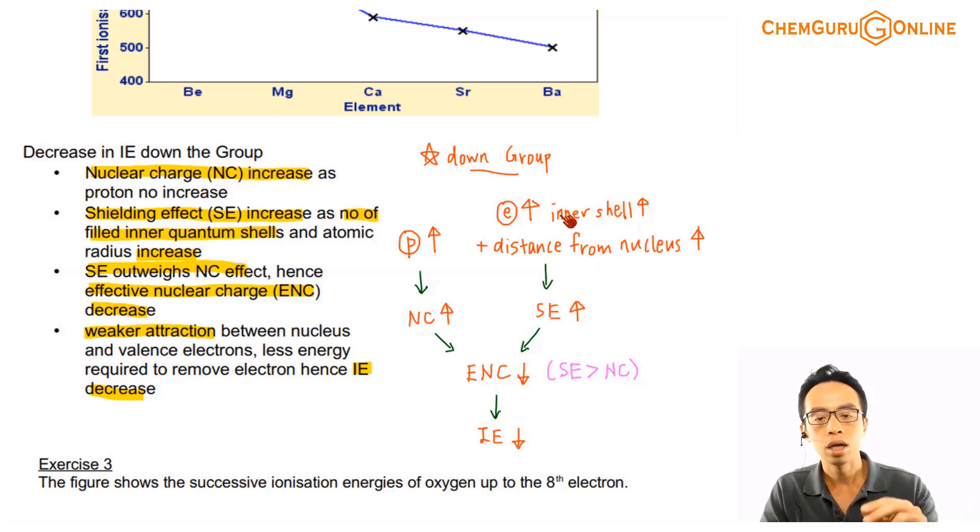So there are two factors here. Only one factor here involving nuclear charge. So this one should be dominant. The shielding effect should be dominant. The nuclear charge effect should be less important.